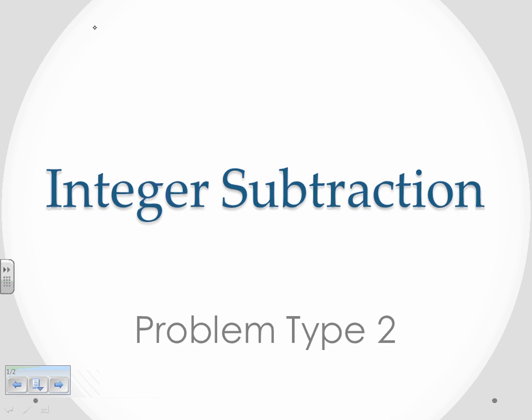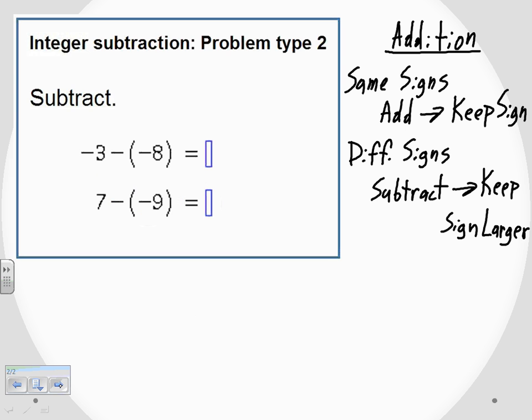Welcome to Integer Subtraction, Problem Type 2. For this video, we're asked to subtract negative 3 minus negative 8 and 7 minus negative 9.